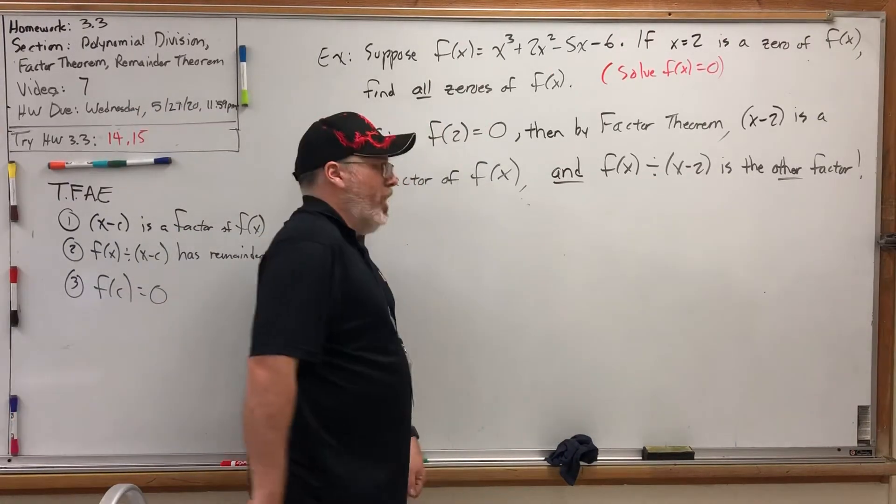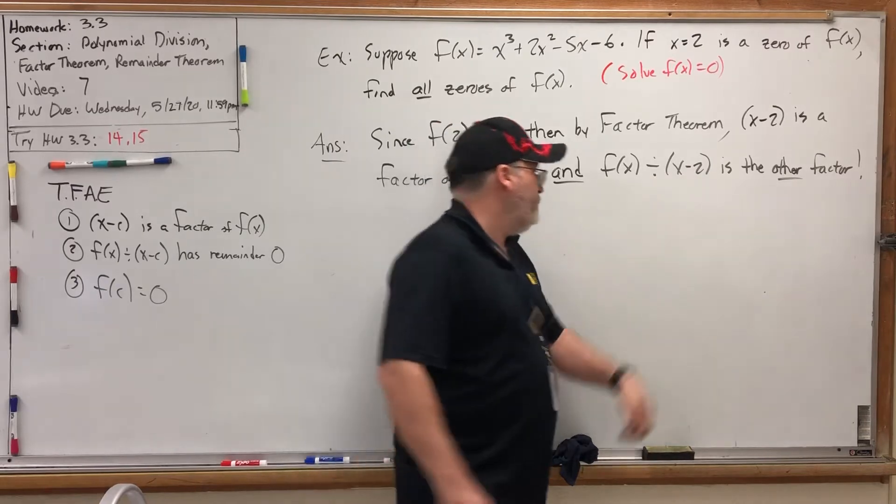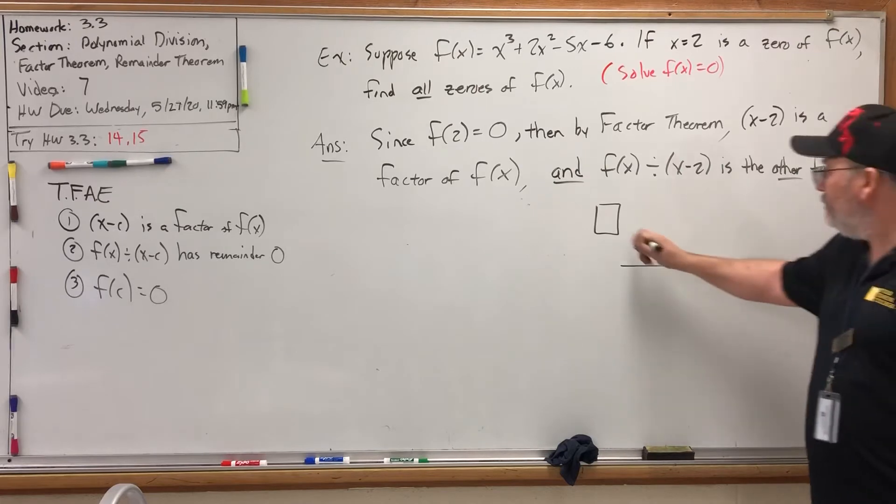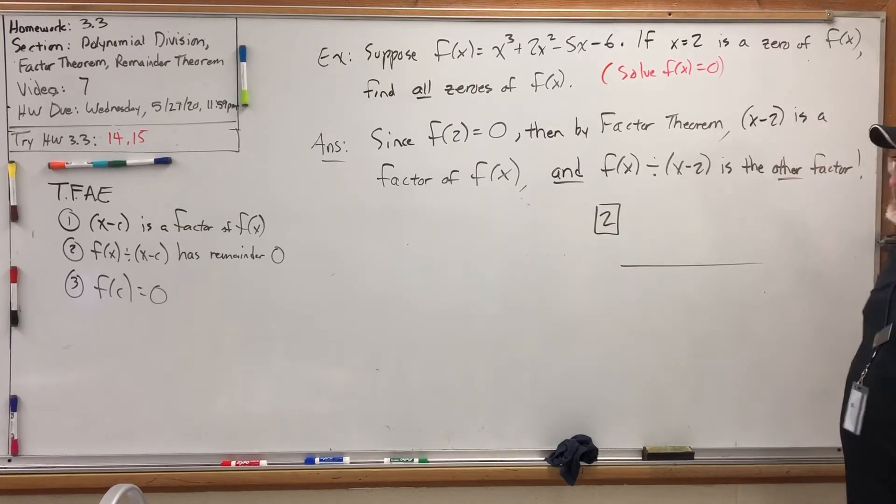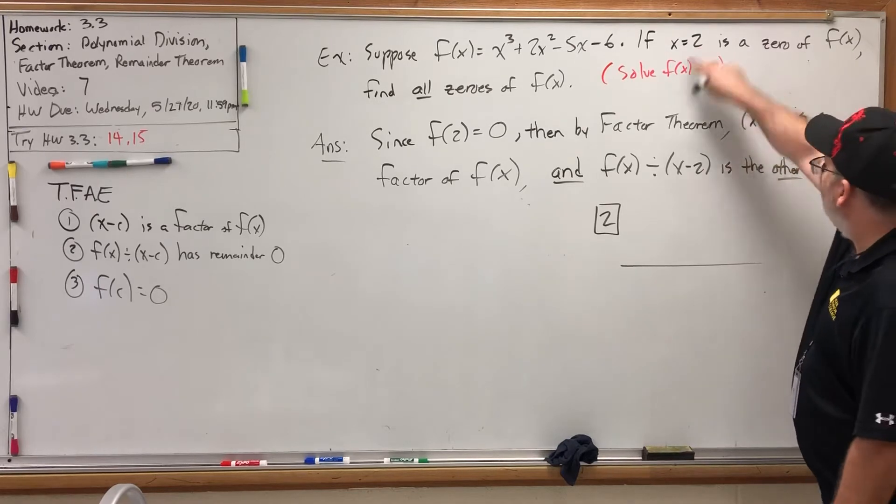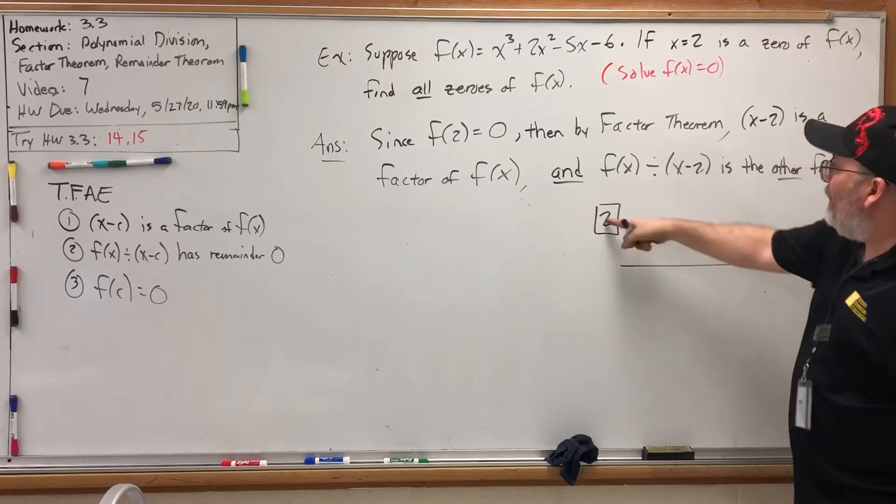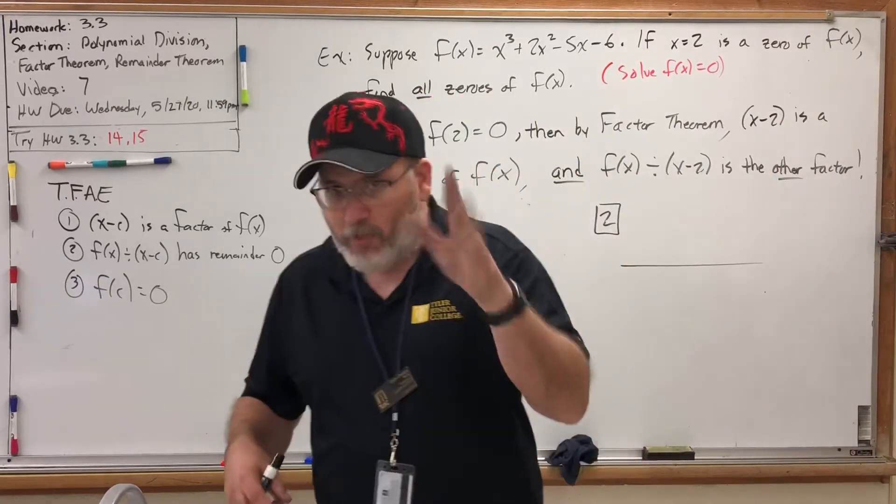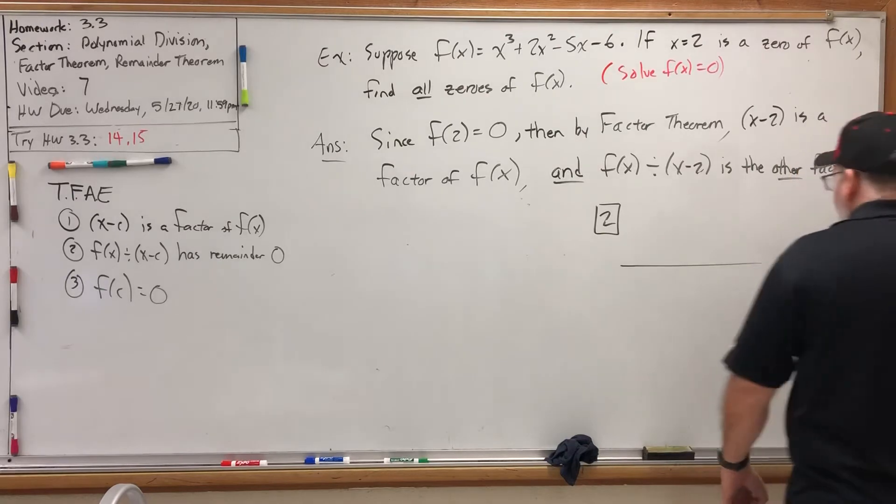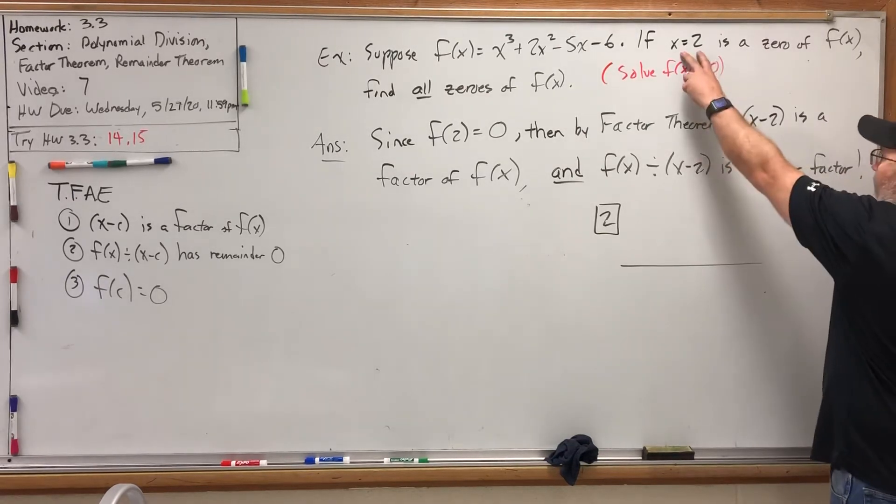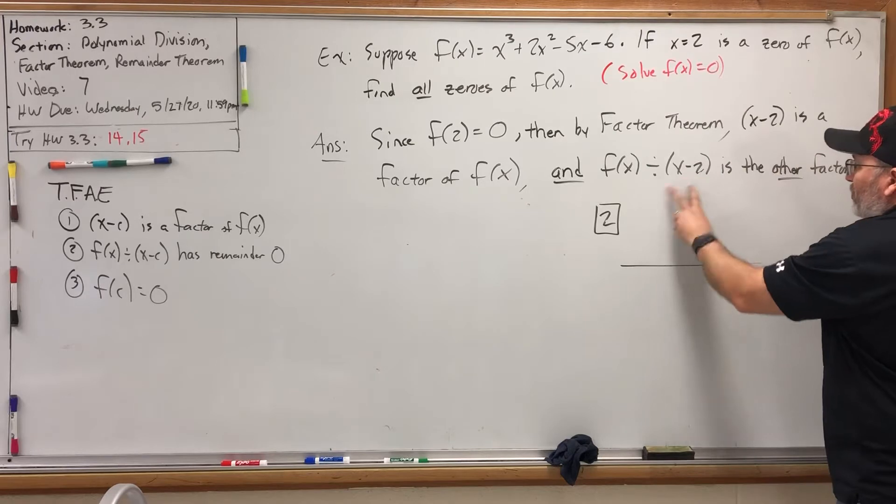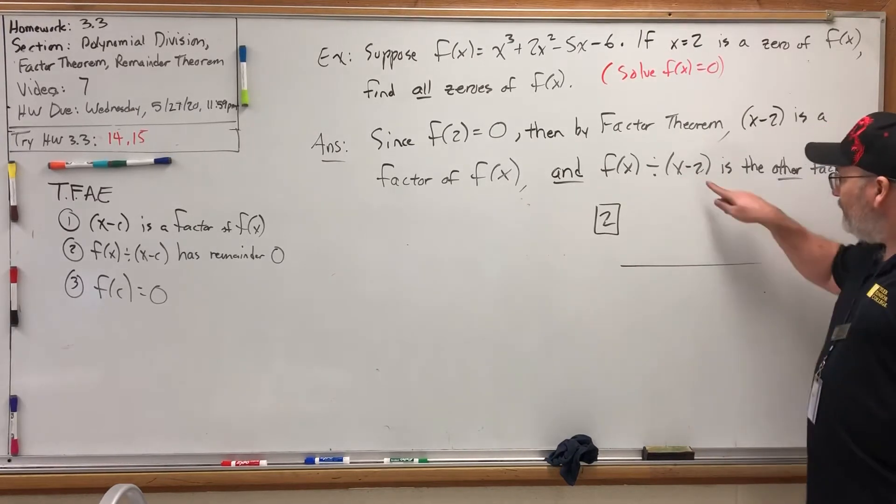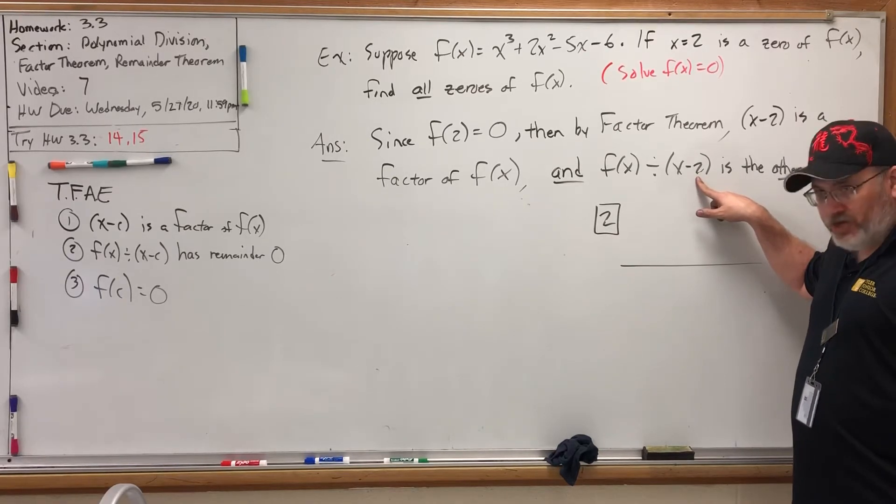So let's do the division problem to find the other factor of the function. To do this synthetic division problem, we have to first set up a box. What number would go in the box? The opposite of this number. You know, this poor two, it has an identity crisis. I'm positive, I'm negative, I'm positive. But there's an easy rule of thumb to know when to change the sign and when not to. You'll hear this a lot more in the next series of videos. But when you're going from zeros to factors to box numbers, the rule for changing the sign is, if the number moves in or out of the factor, change its sign.